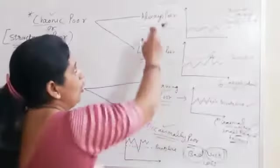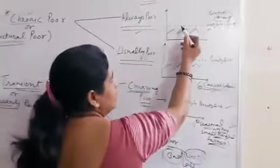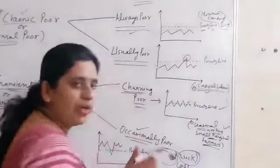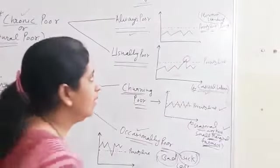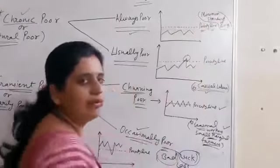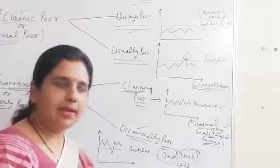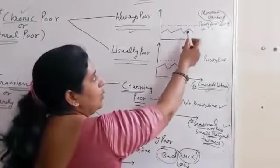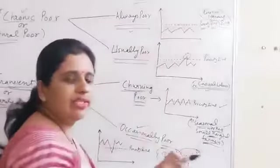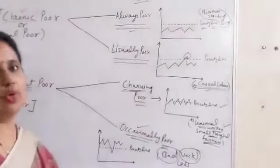First we will talk about always poor. As the name suggests, they are always poor. Now see the diagram — this is the poverty line. Poverty line is the minimum standard of living. Always poor people fall below the poverty line. They are always below the poverty line, that's why they are called always poor.